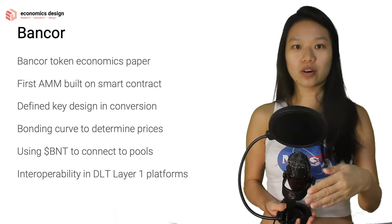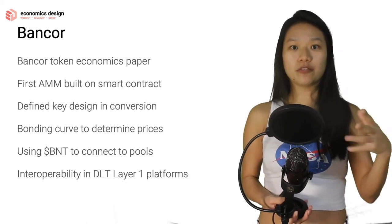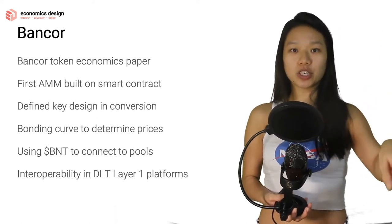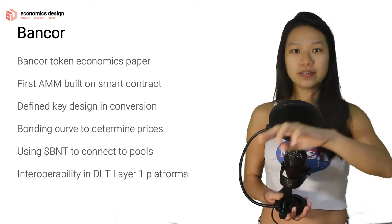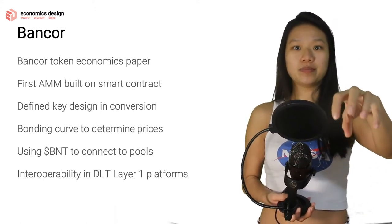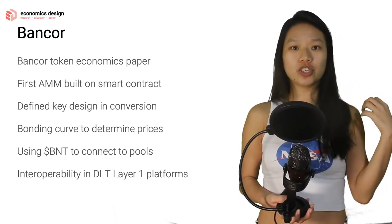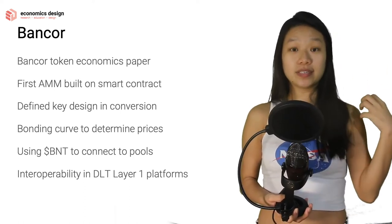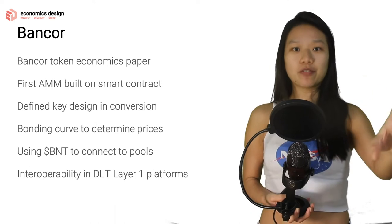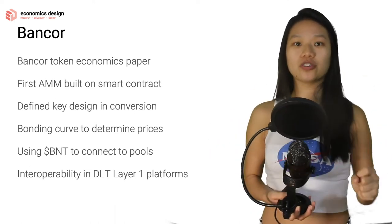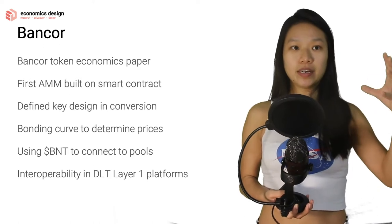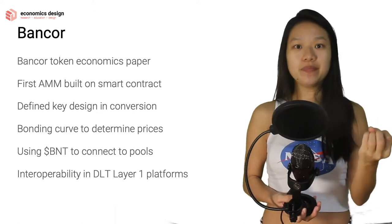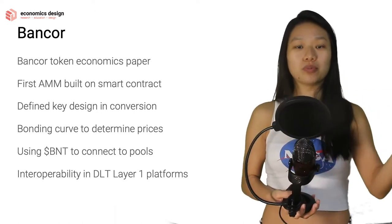For example, you want to fly between New York and Hong Kong, but the flights are full because there's no direct connection. So what you do is fly first to Chicago, and from Chicago you fly to Hong Kong. That stopover in Chicago is basically BNT. So if you want to change New York tokens to Hong Kong tokens, you first take your New York token to exchange for BNT, and then use BNT to exchange for Hong Kong's token. That's exactly how Bancor works — BNT is the common denominator to allow access to all these liquidity pools.